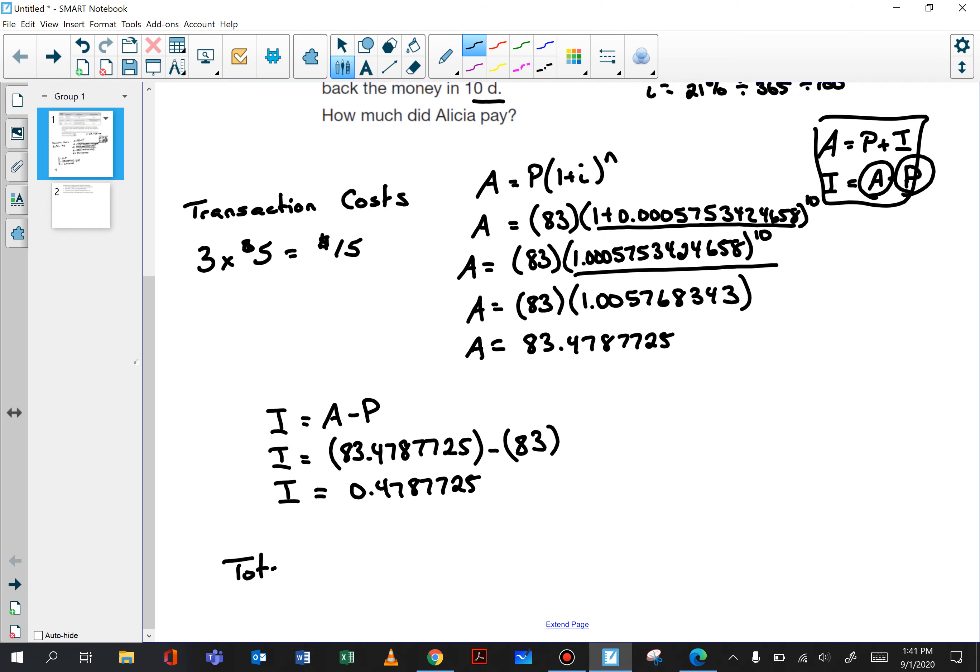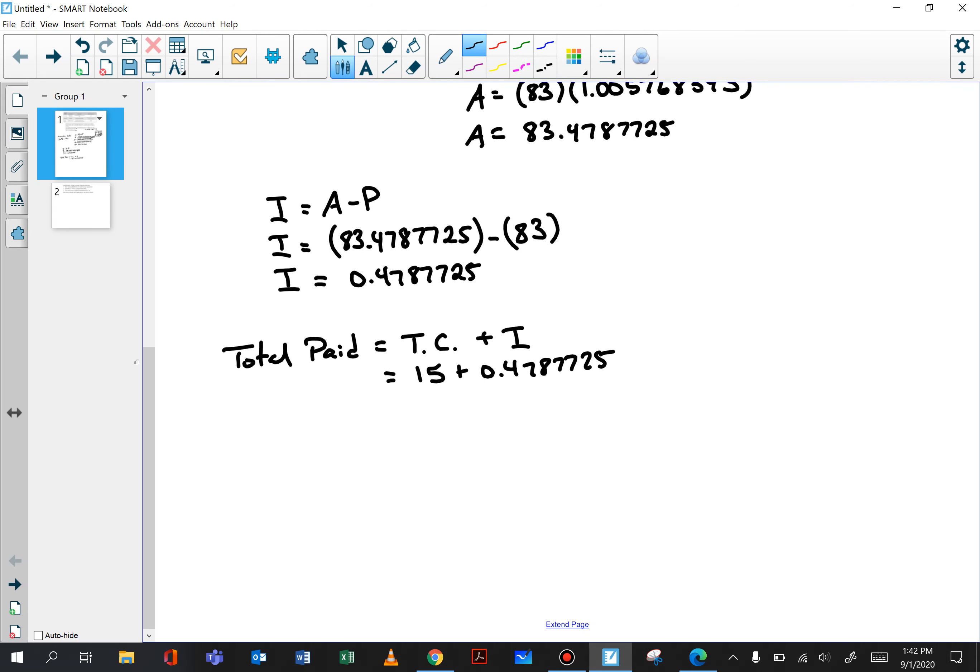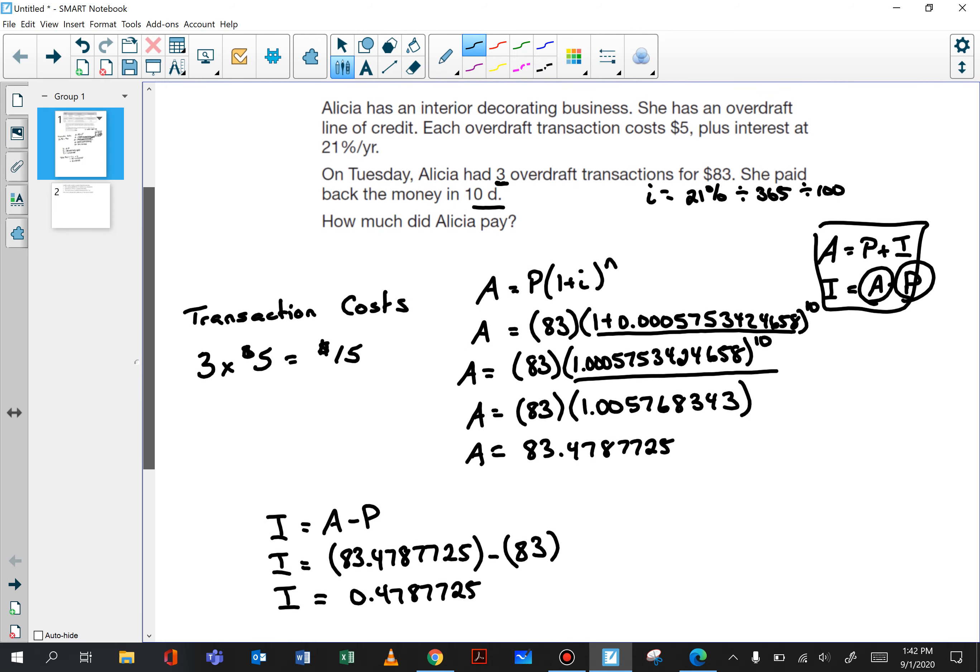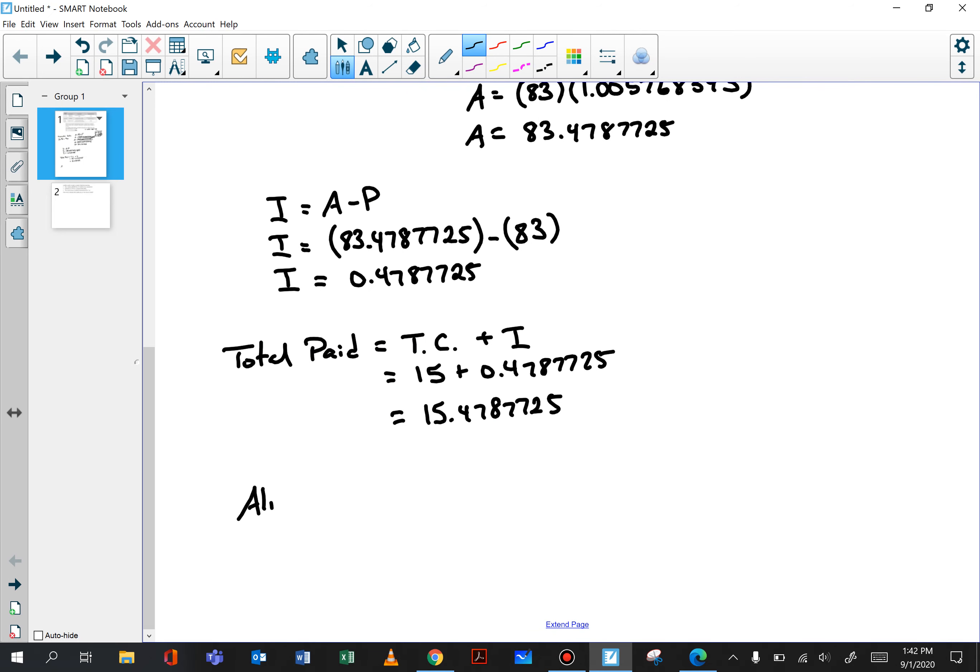So the total paid is the transaction costs plus the interest. The $15 for the transaction fees plus 0.47877725. The total paid is 15.47877725. So the question was how much did Alicia pay? Alicia paid $15.48 in total.